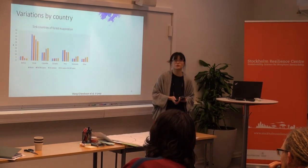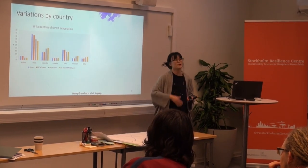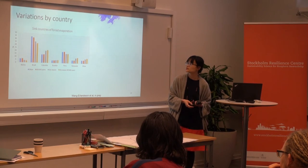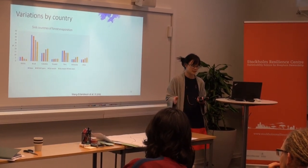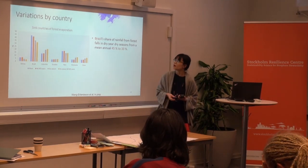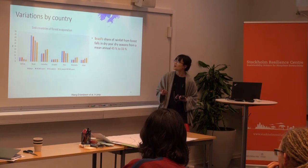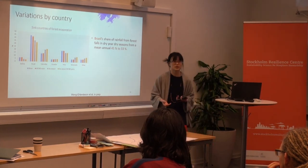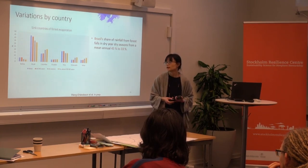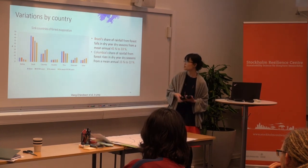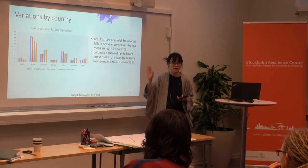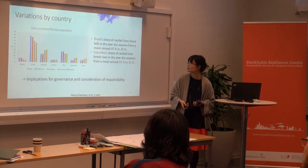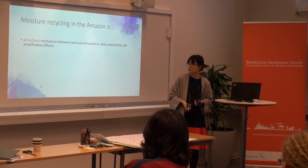That was on the mean annual scale, but because of seasonal changes in moisture recycling patterns, there's quite a variation in the national share of moisture recycling fluxes. For example, Brazil's share of rainfall from the rainforest is 45% on a mean annual basis, but in the dry season it actually drops to 33%. In the dry season when rainfall is most needed and most vulnerable, this share changes significantly. Colombia, for example, goes from 15% to 22%. Who is most concerned about the Amazon also depends on when you need the rainfall, which has implications for governance and temporal consideration.